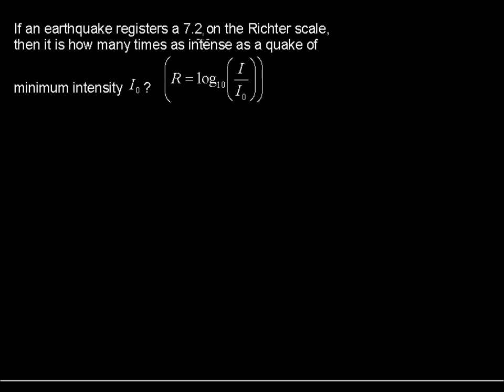Okay, so we have this earthquake of 7.2 on the Richter scale, and we're saying the intensity of our earthquake in question equals what multiplier, how many times the amount of some minimum intensity.